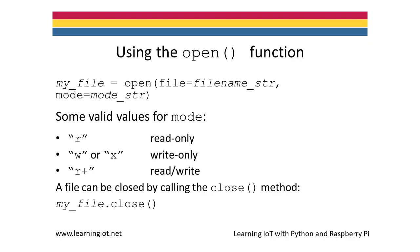The simplest way to open a text file is to use the Open function, which returns a file object. Although the Open function is defined to have eight parameters, we'll only pass arguments for the parameter file and the parameter mode. The default parameter value of mode is r, which corresponds to read-only. To open a file in write-only mode, pass the string w or x as the argument. To open a file in read-write mode, pass the string r+ as the argument.